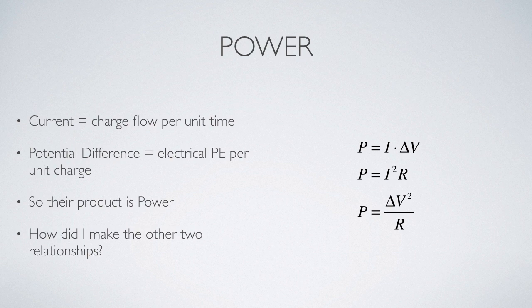It's fairly simple. We look at what current is. Current is charge flow per unit time, coulombs per second. Potential difference or voltage is electrical potential energy per unit charge. So if I take the product of those two quantities, I would have energy per unit time: power. That can be used along with delta V equals IR to make these other two relationships.